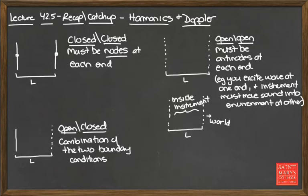We looked at standing waves at the beginning of lecture, particularly for musical instruments where fundamental harmonics get set up. These are standing waves set up between two endpoints in a musical instrument — be it two solid endpoints like where a guitar string or violin string is anchored down, open boundaries like a wind instrument or trumpet, or some combination of fixed and open boundaries like an organ pipe.